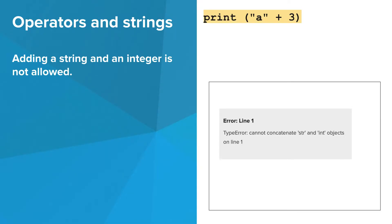One thing that is not allowed is adding a string and an integer. Now let's say we want to make a string that consists of the letter A and the digit 3. We can do that by converting the number 3 into a string using the str function before adding it to another string.